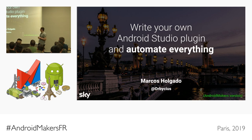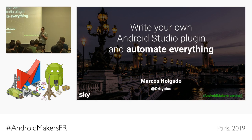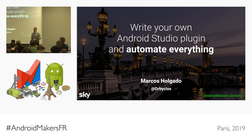My name is Marcus, I work at a very big company in the UK called Sky. Today I'm here to talk to you about how you can write your own plugin for Android Studio to automate pretty much everything — all those interactions with tools like Jira or Trello, your own company tools or backend systems, and repetitive tasks like setting up a new project, a new feature module, a new MVP pattern, MVVM, all that kind of stuff.